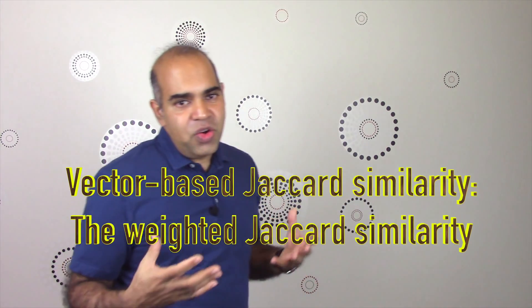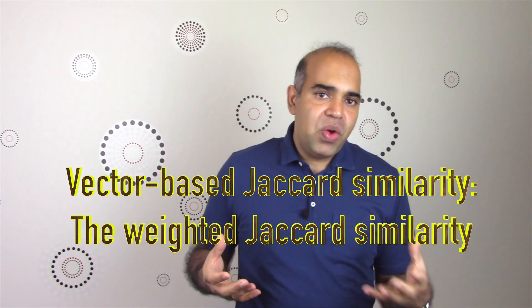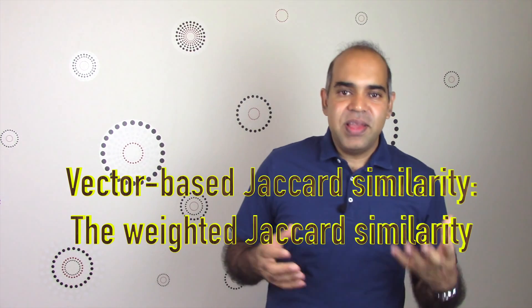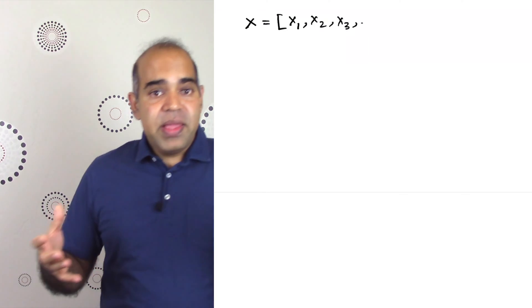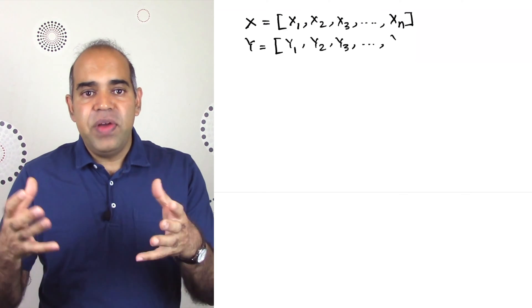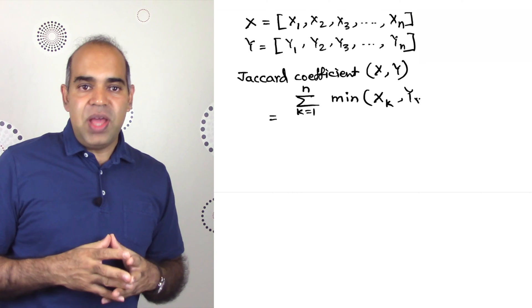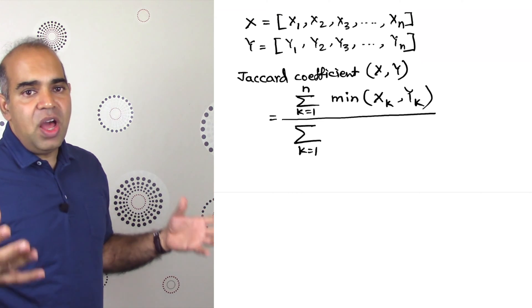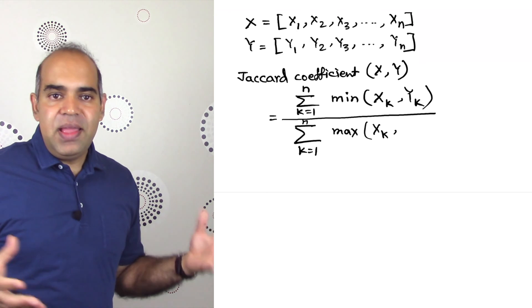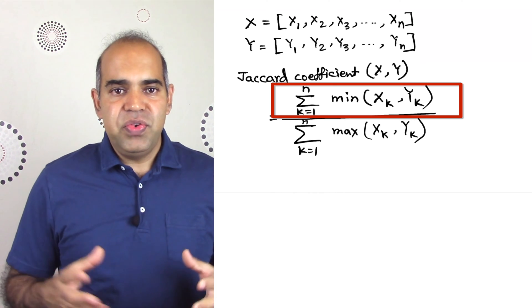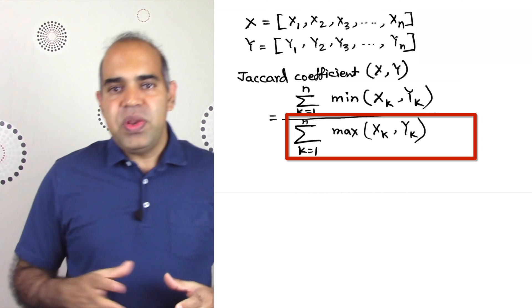Let us talk about the vector-based Jaccard index, which is commonly known as the weighted Jaccard index, or coefficient, or similarity. The weighted Jaccard index between two vectors x and y of length n is the summation of the minimum of the two vectors in each dimension divided by the summation of the maximum of the two vectors in each dimension. Practically, the numerator is the intersection of two vectors and the denominator is the union of two vectors.